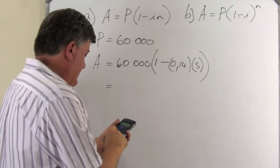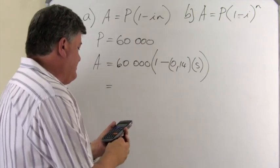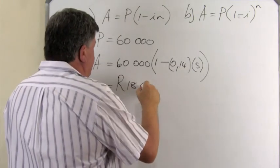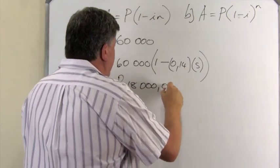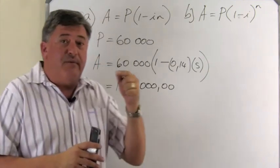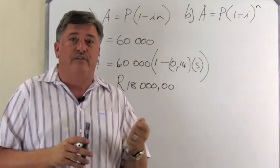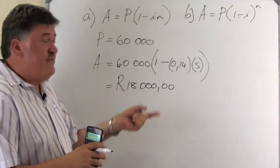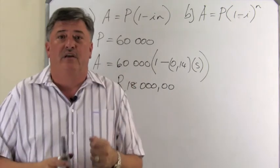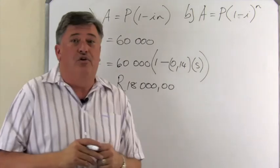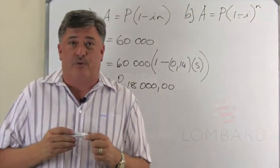And if we do that multiplication quickly, we subtract, then we get an answer of 18,000 Rand, and I hope you agree with me on that one. So, the scrap value of your car on the straight line method will be 18,000 in five years' time, if the value at this point in time is 60,000. So, let's now look at the B part of this question.